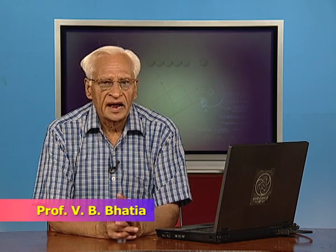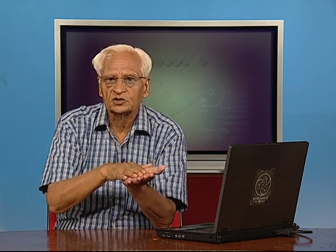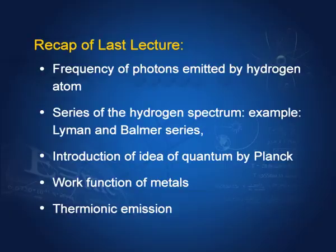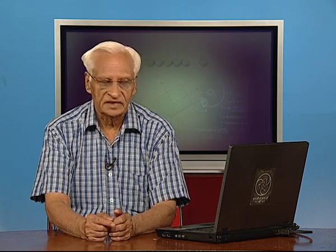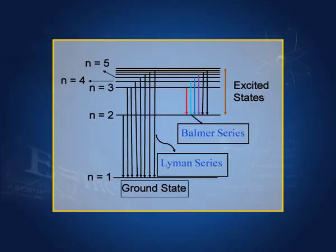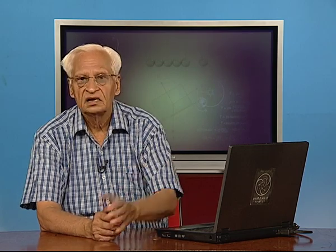In the last lecture we discussed frequencies and wavelengths of photons emitted by the hydrogen atom. We found that if the transition takes place to the ground state, the series formed is called Lyman series. If the transitions are up to the state n=2, they are known as Balmer series. These series can also exist in an absorption spectrum, where you get dark lines. This we covered in the last lecture.